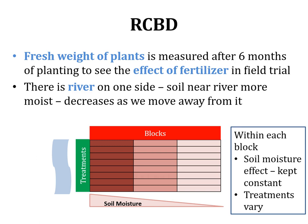Within each block, the soil moisture effect is kept constant while the treatments vary. As discussed, within each block the environmental conditions — the sources of variation other than treatment — are as homogeneous as possible. The blocks differ from each other, but within a block the effect of soil moisture is uniform. The effect varies from block to block, but within a block that effect is constant. Treatments are variable within a block, but the environmental conditions and sources of experimental error are the same within each block.